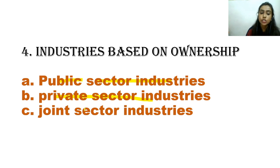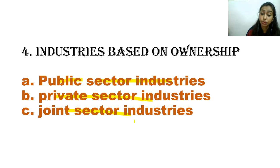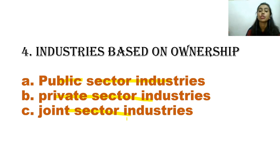The next one is joint sector. Joint sector is where both the government and private individuals are involved in an industry together. In India, a very big example of a joint sector industry is Maruti Suzuki, which is a joint sector company — a combination of government and private organization.